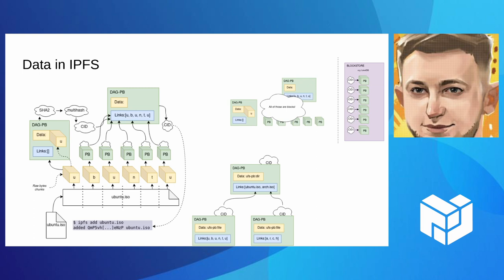When you construct the protobuf, we hash it, we put this hash into a multi-hash — just a fancy way to express hashes with different algorithms — and then we put the multi-hash into a CID, which is the way to express a link to data with some certain encoding. This makes it possible to know how to interpret the data and further traverse the DAG, or the data-specific graph. By default, all the links are linking to DAG protobufs.